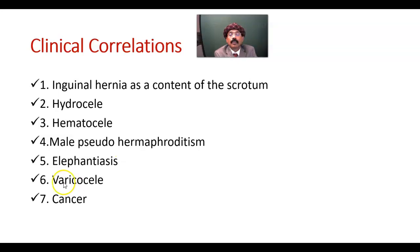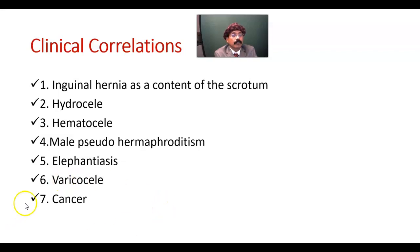Elephantiasis: due to lymphatic blockage by parasitic infection like filariasis, the lymphatic drainage may be blocked and there may be collection of fluid. Varicocele: the pampiniform plexus of veins in the spermatic cord may be very much swollen or dilated, especially in a person standing for a long time in some occupations. Varicocele may also be present due to obstruction in venous drainage, and it may be a manifestation of retroperitoneal cancer. The scrotum's cancer drainage goes to the superficial inguinal lymph nodes, and the left scrotum is positioned a little bit lower than the right scrotum.